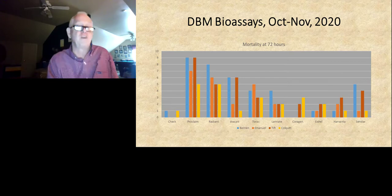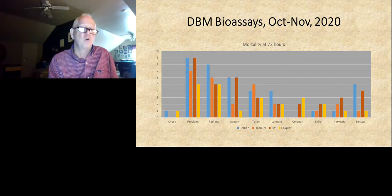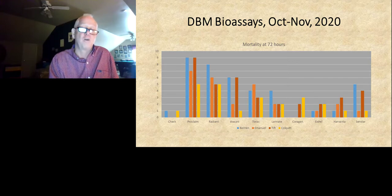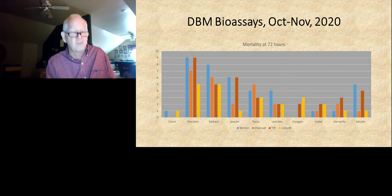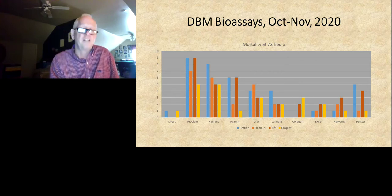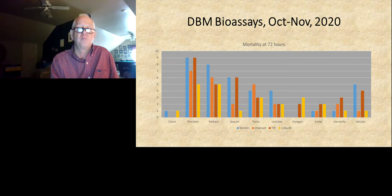We do have resistance across all these products, but Proclaim and Radiant are working most consistently. Avant and Torac have lower mortality than Proclaim and Radiant, but they were showing obvious effects on reducing feeding. Of concern is the fact that Coragen, Exirel, and Harvanta all looked relatively poor in all four bioassays. Coragen has not worked well for us for two or three years, and Exirel and Harvanta have been mixed — some fields look good, some have not. But it looks like resistance to the overall Group 28 may be getting higher, and we're getting poor efficacy out of all three of those products.